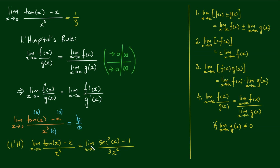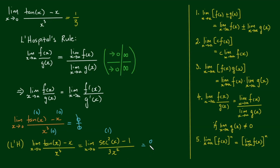Let's see if this limit now works. Using the power law (limit law 5), the limit as x approaches 0 of sec²(x): sec(x) approaches 1, and 1 squared is 1. Then minus 1 gives the top equaling 0, and as 3x² approaches 0, the bottom also goes to 0. So we have another indeterminate form and will have to apply L'Hôpital's rule again.